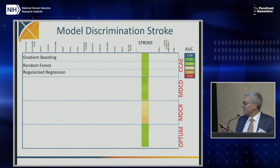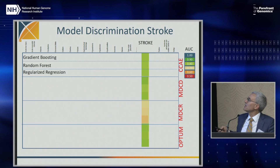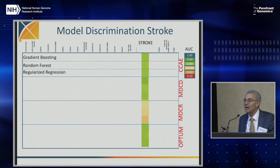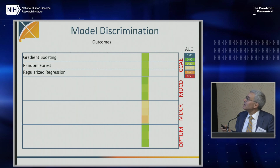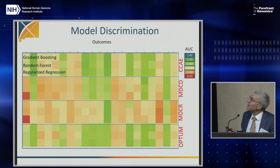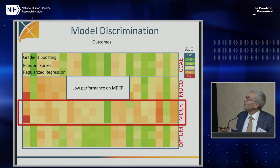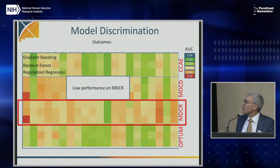Here's a plot showing different diseases — stroke — across four different databases, with three boxes per database for three methods: gradient boosting, random forest, and regularized regression. We also have deep learning. Across databases, you see different performance: private payer, Medicaid, Medicare, and another private payer. Green indicates the highest predictive value, red the worst — Medicare performs the worst.